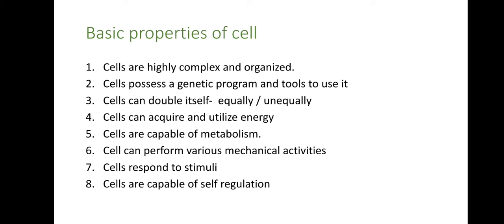Cells are capable of self-regulation. Cells have very specific mechanisms involving DNA, RNA, and protein. The nucleus is called the brain of the cell — it regulates everything. For example, if DNA fails to replicate properly, that's called a mutation, and the cell also has a mechanism to self-destroy. That is how cells are capable of self-regulation.